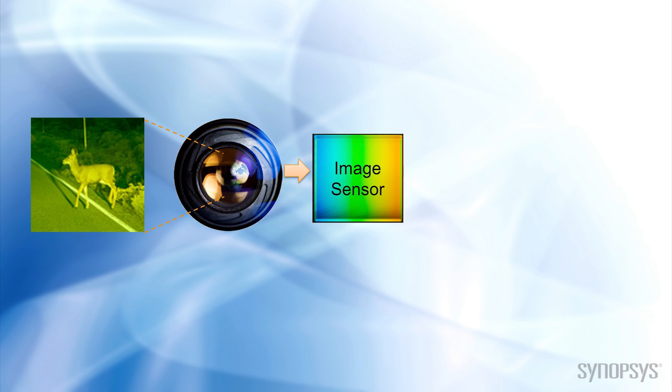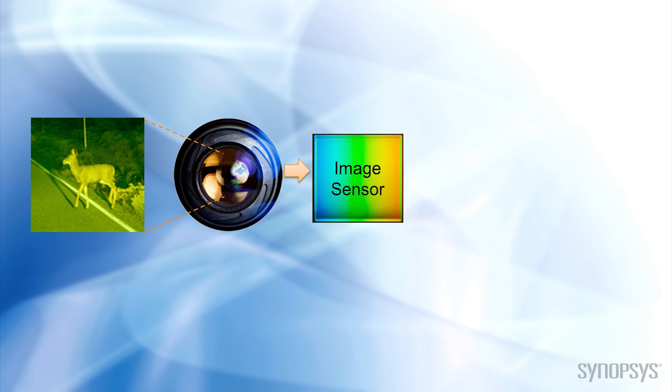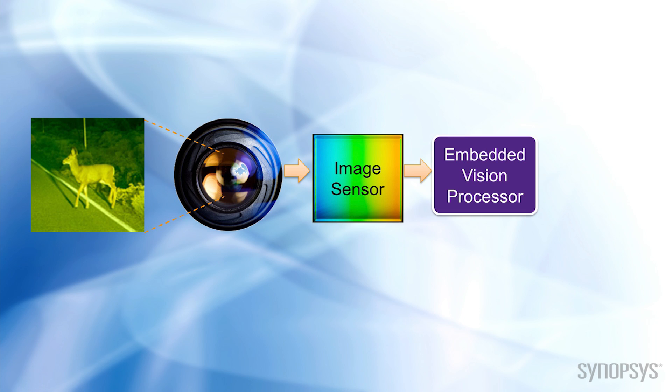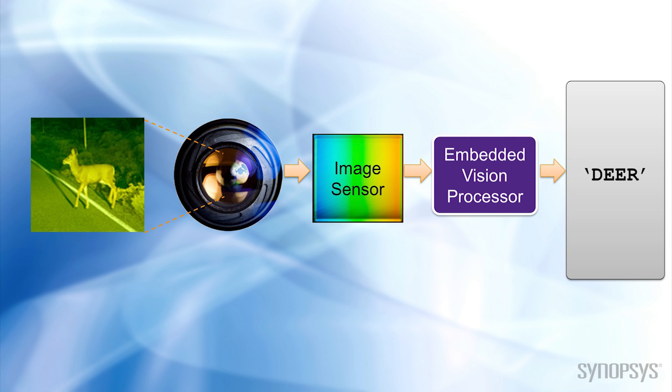if an image sensor gives a machine sight, Embedded Vision helps that machine understand what it is seeing in real time.